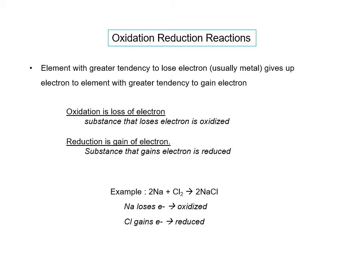Here's an example of an oxidation-reduction reaction. Sodium has a charge of zero as a free element, but as a compound it becomes plus one. So it lost an electron and therefore it is oxidized. Chlorine has a charge of zero as a free element, and in NaCl as a compound it has a charge of minus one. Going from zero to minus one is gain of electron, so the chlorine was reduced.